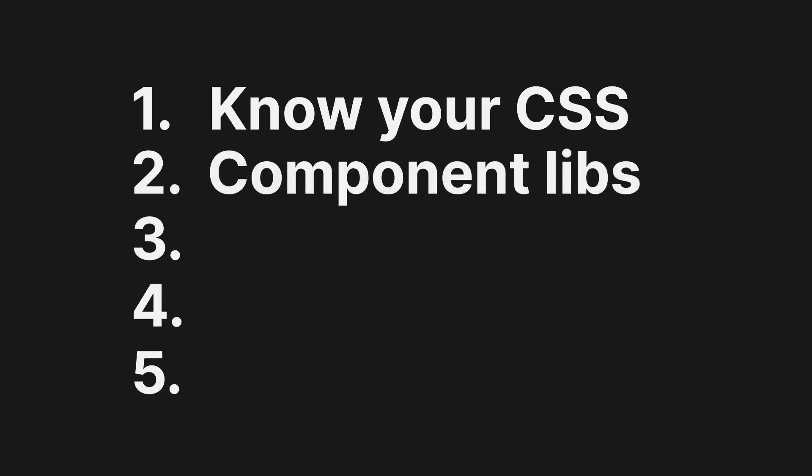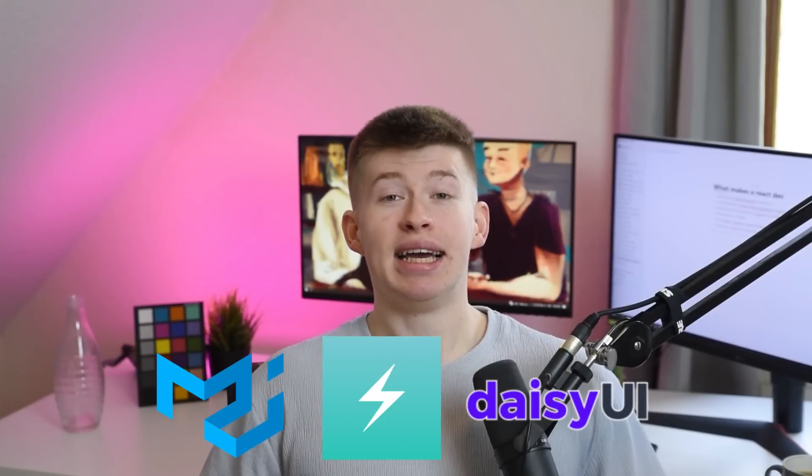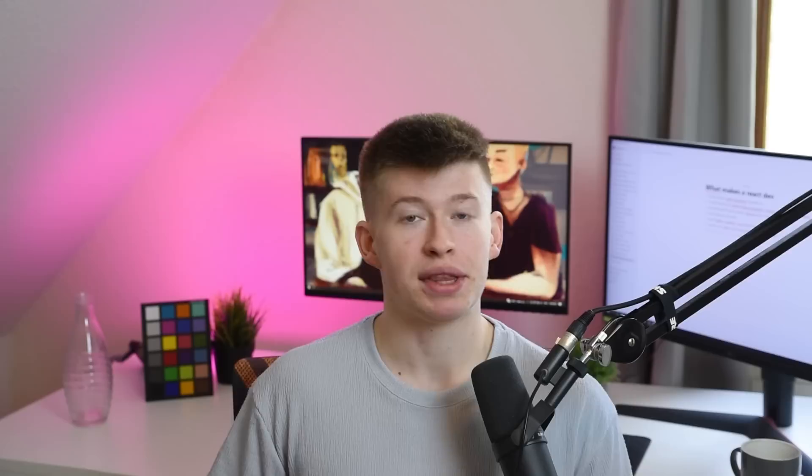Second: using a component library. Trust me, it's super important — it saves you so much time. It doesn't matter which one you use: Material UI, Chakra UI, Daisy UI — it doesn't matter, use one. Writing all the code yourself might sound impressive, but it's super unpractical. Choosing the right UI library also depends on your styling choice. If you like Tailwind CSS, you might go well with Headless UI, Mantine, or Daisy UI. If emotion is your weapon of choice, you might be better off with Material UI.